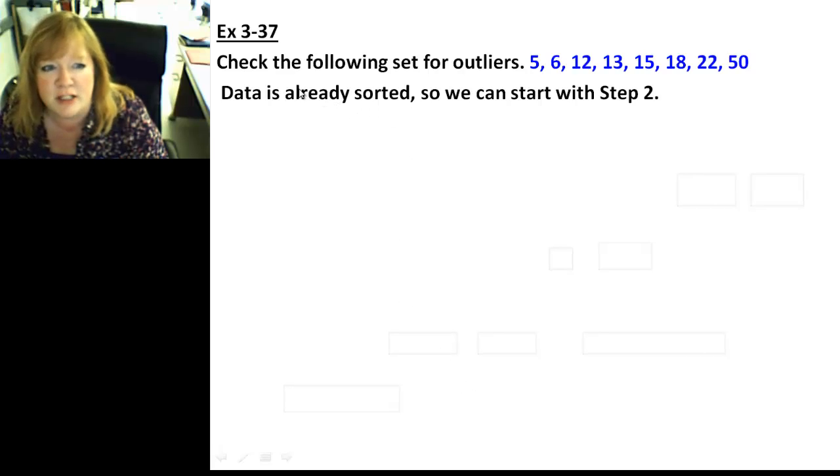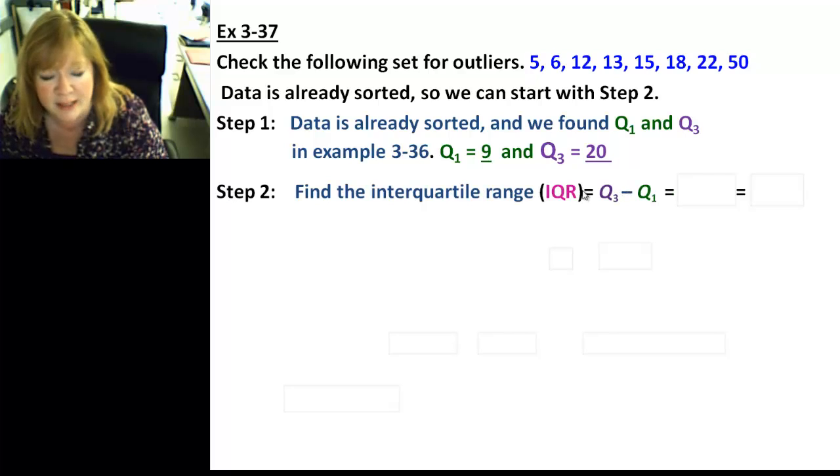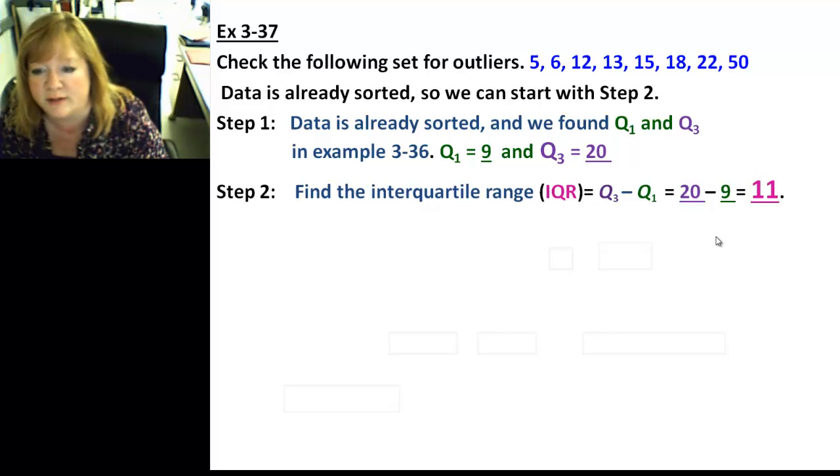So, let's look at this guy. We already messed with this data and we found Q1 and Q3 already. So, it's already sorted. We can start with step 2. And we found Q1 was 9 and Q3 was 20. This was from our last example. Now, we need to find the interquartile range. So, what we do with the Q1 and Q3 is we subtract them. So, you'd have 20 minus 9. That's going to be 11. I love that number.